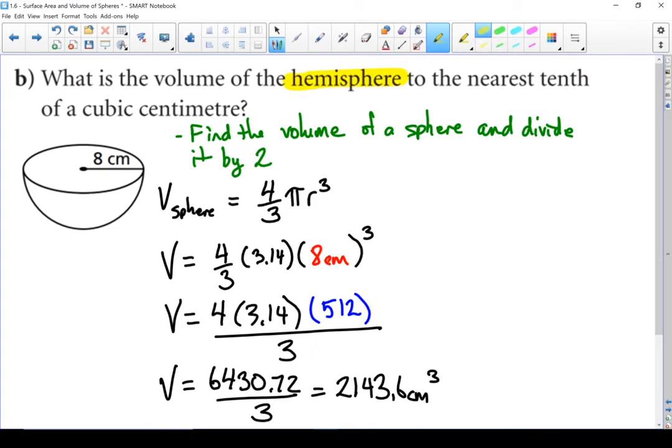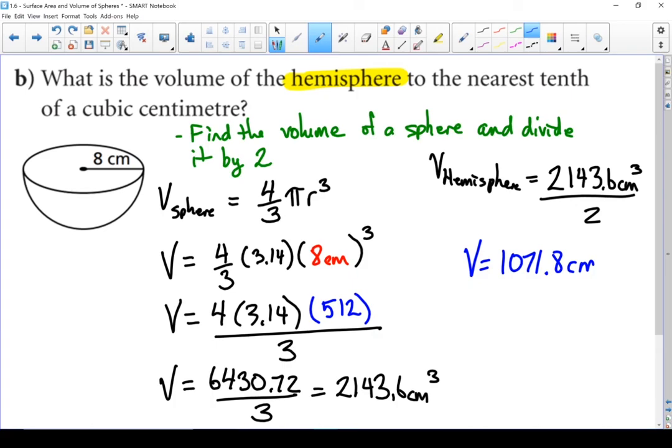But we're not dealing with a full sphere. We're dealing with a hemisphere. So I'm going to take that number, divide it by two, and there's the volume of my hemisphere. So the volume of that hemisphere is 1071.8 cubic centimeters.